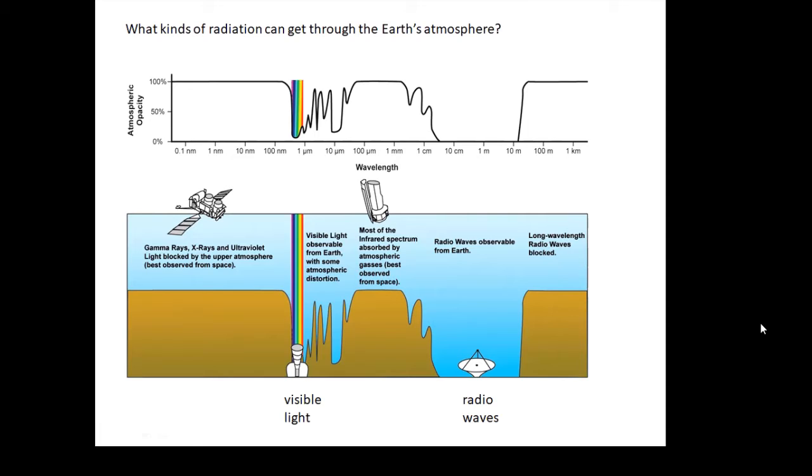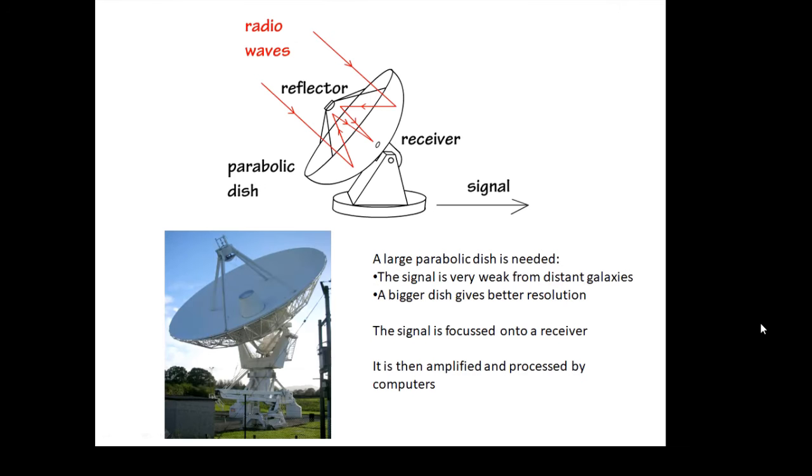How does a radio telescope work? You have a large parabolic dish and the parabolic dish will focus all of these radio waves onto a reflector which reflects it onto a receiver which produces a signal. That signal will go off to a computer, it'll be amplified and then processed by a computer, possibly to produce a false color image that would make sense to us.